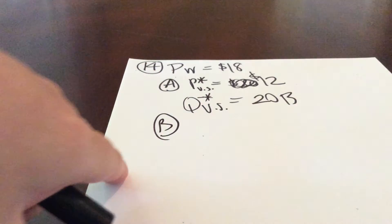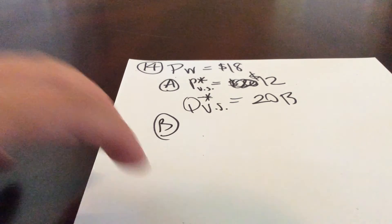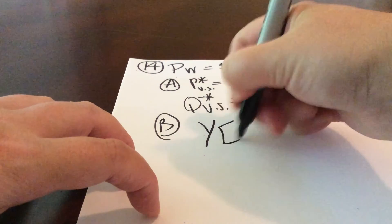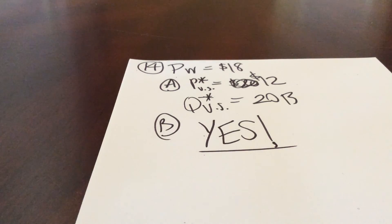Question B, does the United States have a comparative advantage in producing semiconductors? And the answer is yes. Yes, the United States does have a comparative advantage in producing semiconductors. How do we know this? We know this because the U.S. price is lower than the price in the world market.